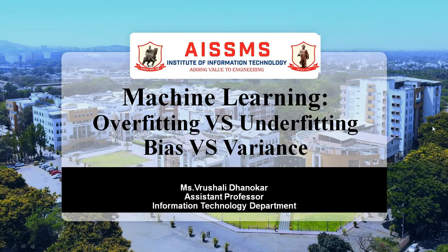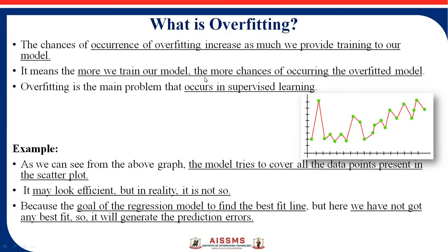The first concept is overfitting. The chances of overfitting increase the more we train our model, so overfitting is a main problem in supervised learning. In this diagram, the green color points are data points. The concept of regression is to try to cover all the data points in a single straight line, but here training is not properly done — the model tries to cover all the points but not in a straight line. This is overfitting.